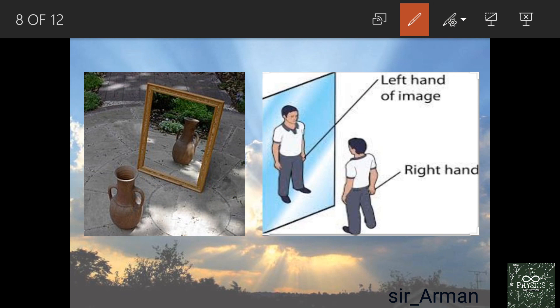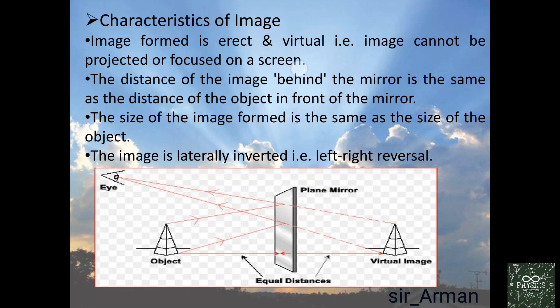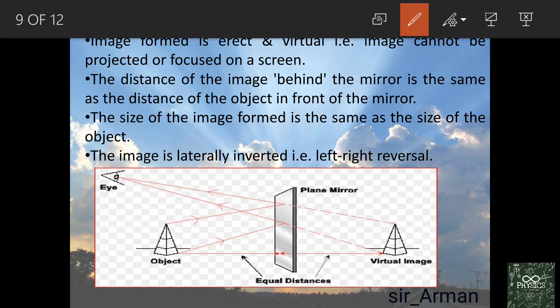Images that can be obtained on a screen are called real images. For example, in a movie theatre, a projector forms pictures on the cinema screen — you can touch that screen and the image exists in the real world. Images that cannot be obtained on a screen are called virtual images.